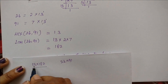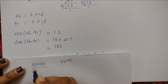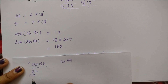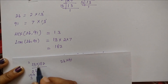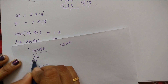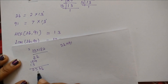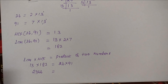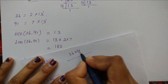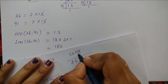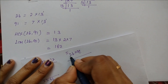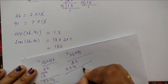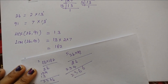We calculate 13 multiplied by 182 equals 2366. And 26 multiplied by 91: 1×6 is 6, 1×2 is 2, 9×6 is 54 with carry 5, 2×9 is 18 plus 5 is 23. So 26 into 91 also equals 2366. Both sides are equal, so LCM into HCF equals the product of the two numbers. This is the answer.